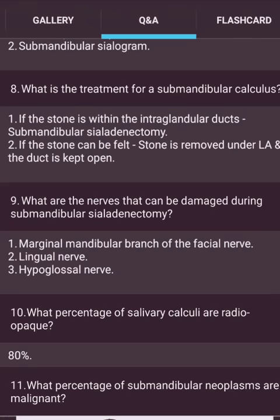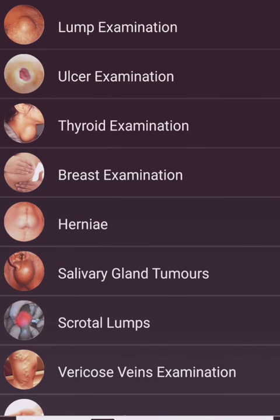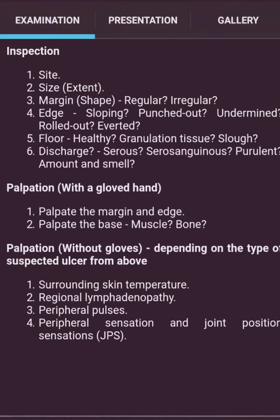Now I will discuss ulcer examination. Inspection: size, extent, margin, shape — regular or irregular. Edge: sloping, punched out, undermined, or rolled out and everted. Floor: healthy granulation tissue and discharge — serous, serosanguineous, or purulent — with amount and smell. Palpation with a gloved hand: palpate the margin, edge, and base — muscle or bone. Then palpation without gloves: assess surrounding skin temperature, regional lymphadenopathy, peripheral pulses, peripheral sensation, and joint position sense.